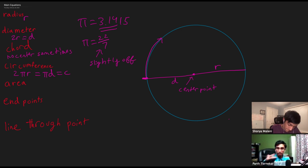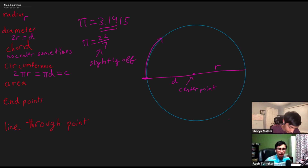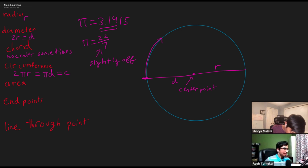22/7 is close enough for classroom experience. Now that you know what pi is and what the circumference is — the circumference is the outside — what about the inside? That's area.